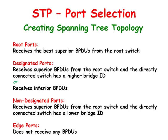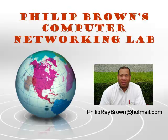The root port receives the best superior BPDUs from the root. The designated port receives superior BPDUs from the root and higher bridge IDs from the directly connected switch, or it receives inferior BPDUs. The non-designated port receives superior BPDUs from the root and lower bridge IDs from the directly connected switch. The edge port does not receive any BPDUs. We have just seen how non-root switches choose the role of their interface ports in order to create a spanning tree. I hope this video was informative and I thank you for viewing.